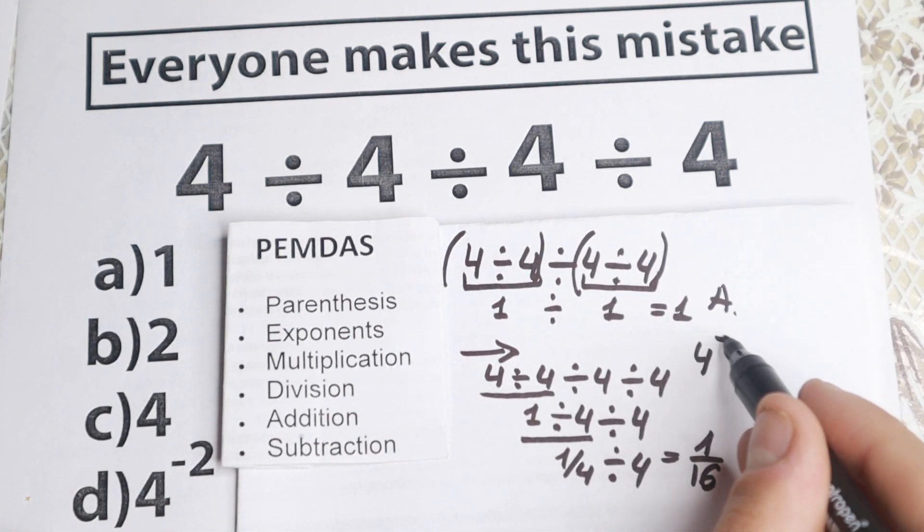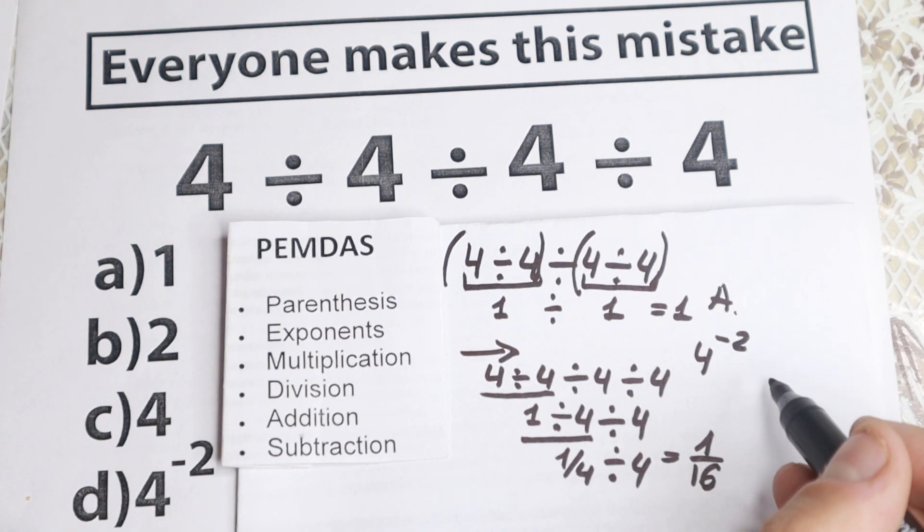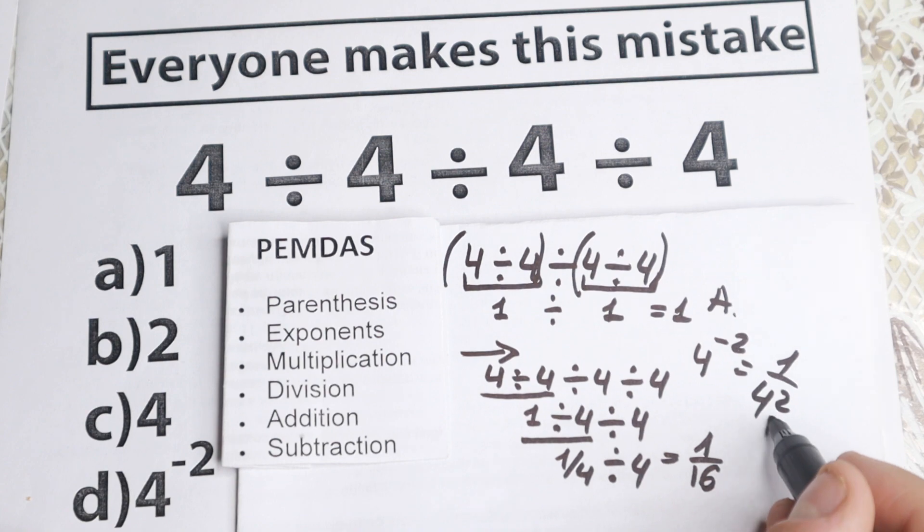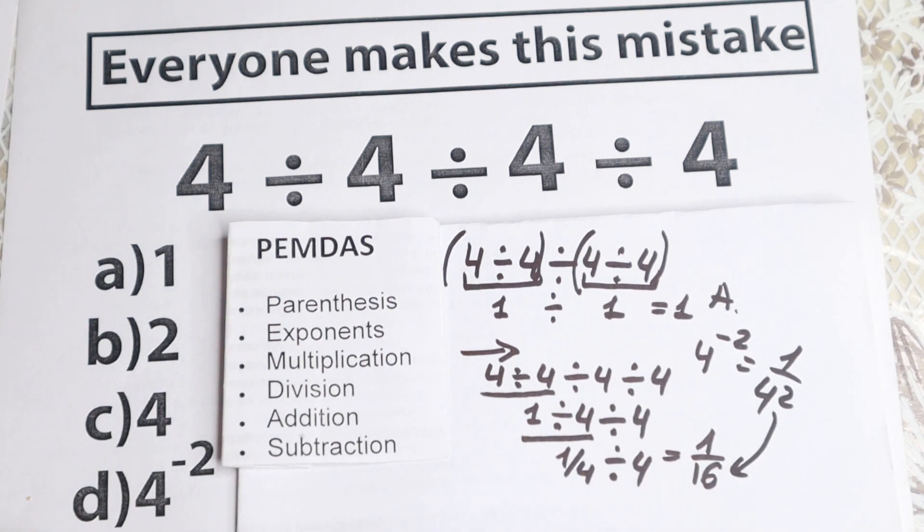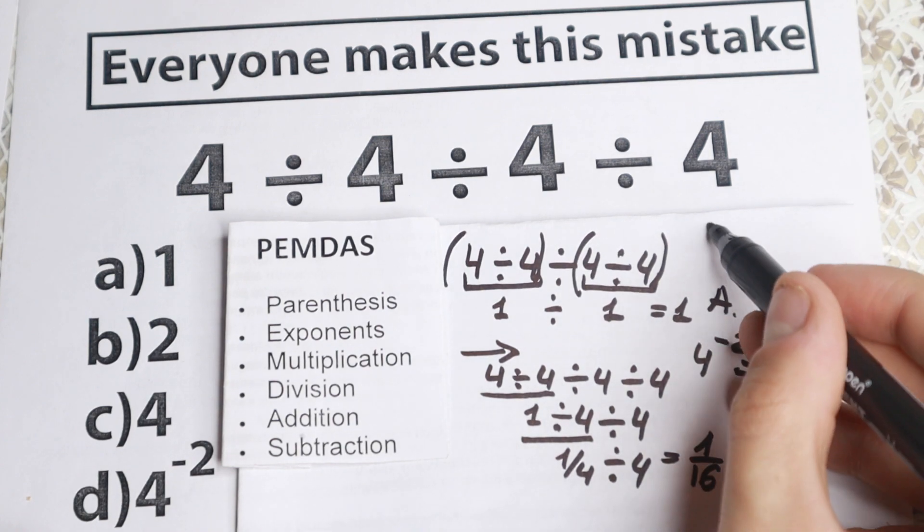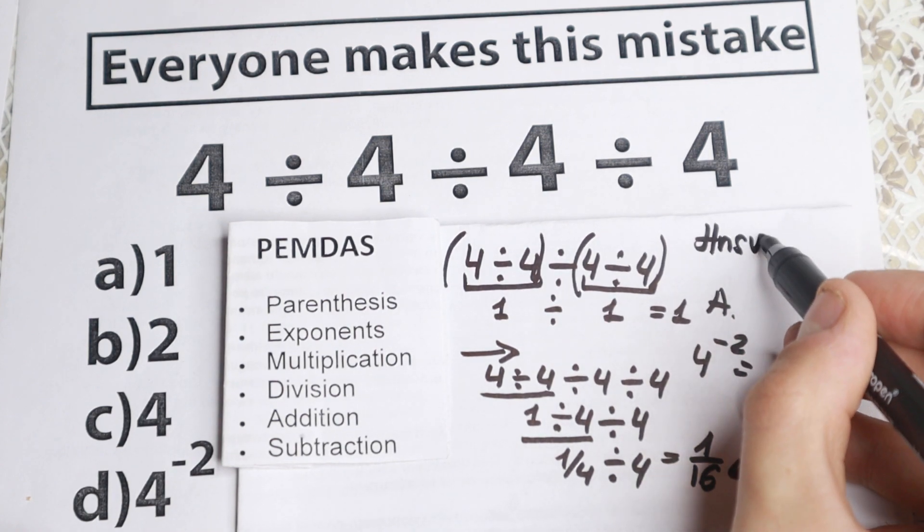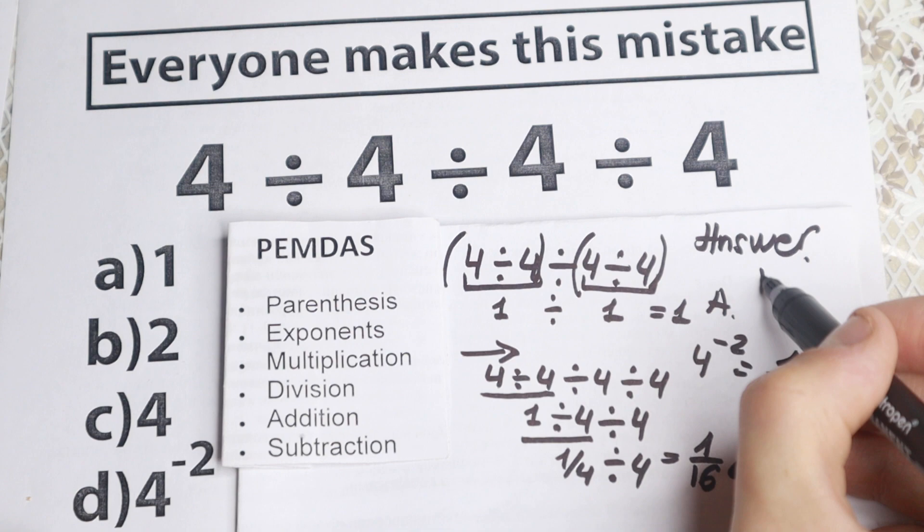Because 4 to the power minus 2, this is equal to 1 over 4 squared, which is equal to 1 over 16. So our answer to this problem is option D. So I write right here our answer, option D.